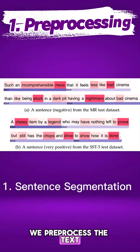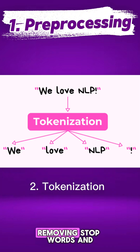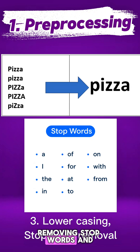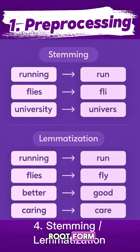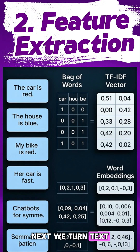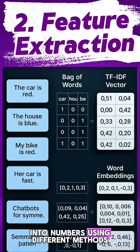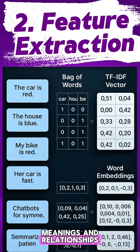We pre-process the text by breaking it into words and sentences, removing stop words, and reducing words to their root form. Next, we turn text into numbers using different methods, so AI can spot meanings and relationships.